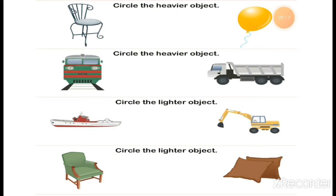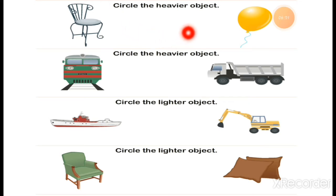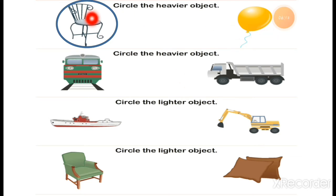I have one more question for you. You have to read this heading first. For each row there is a new heading. Here it says: circle the heavier object. Two objects are given — one is a chair and one is a balloon. You have to circle the thing which is heavier, whose weight is more — the thing that is hard to move from one place to another. From these two, the chair is the heavier thing compared to the balloon.